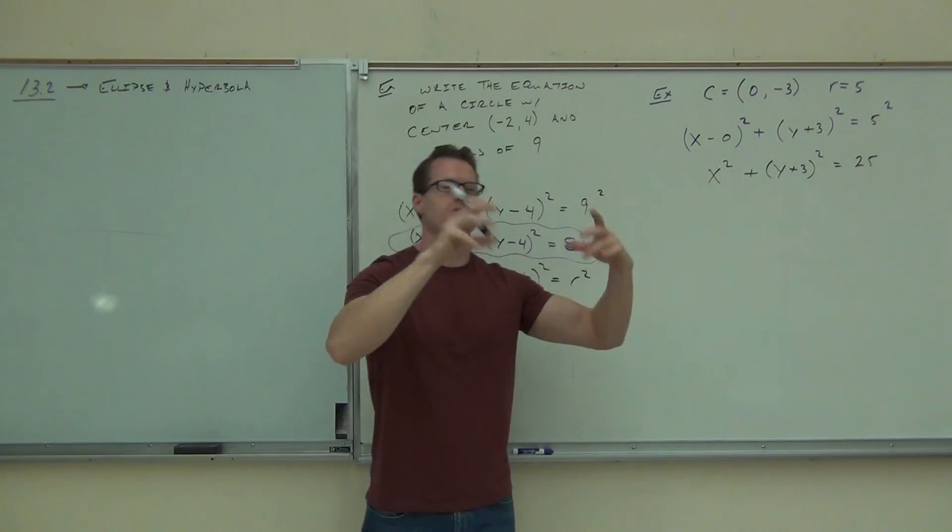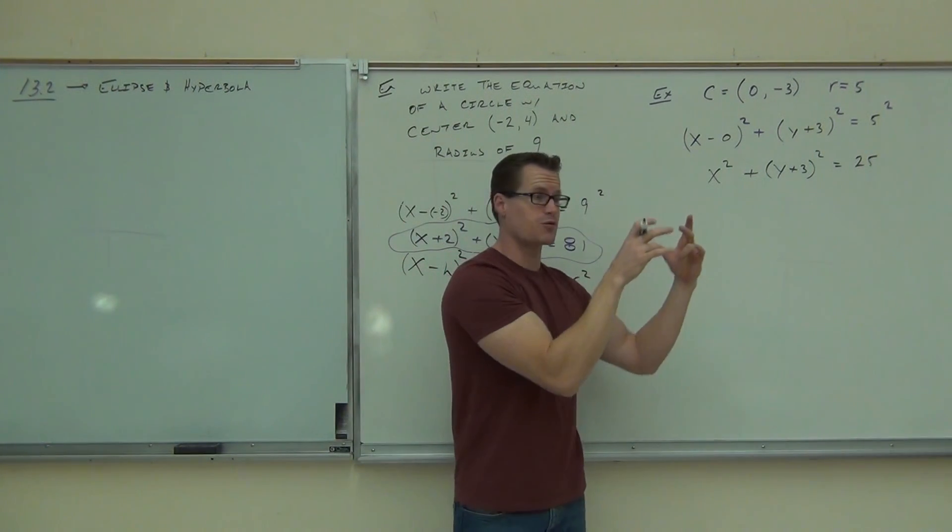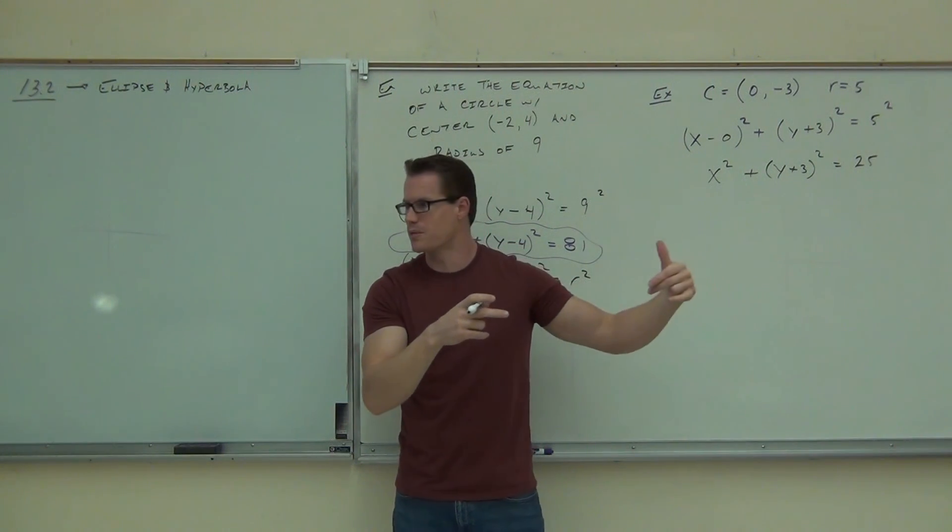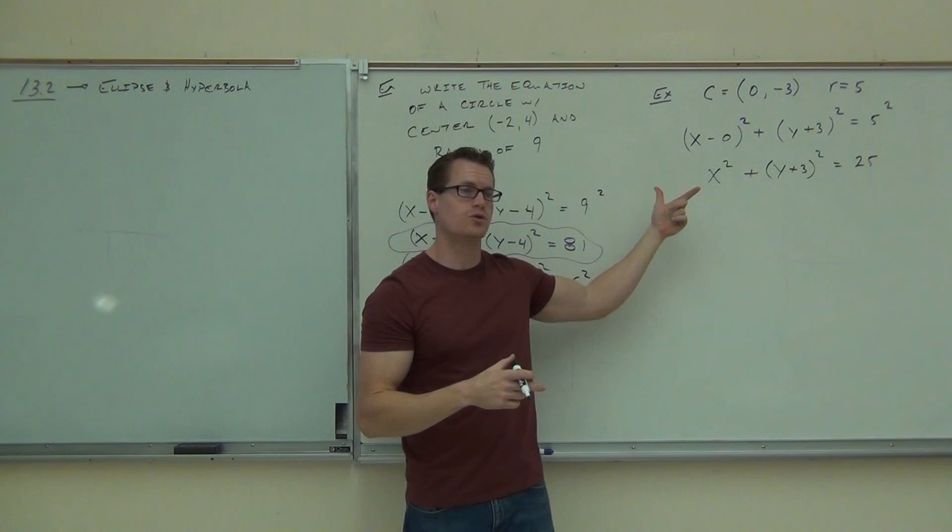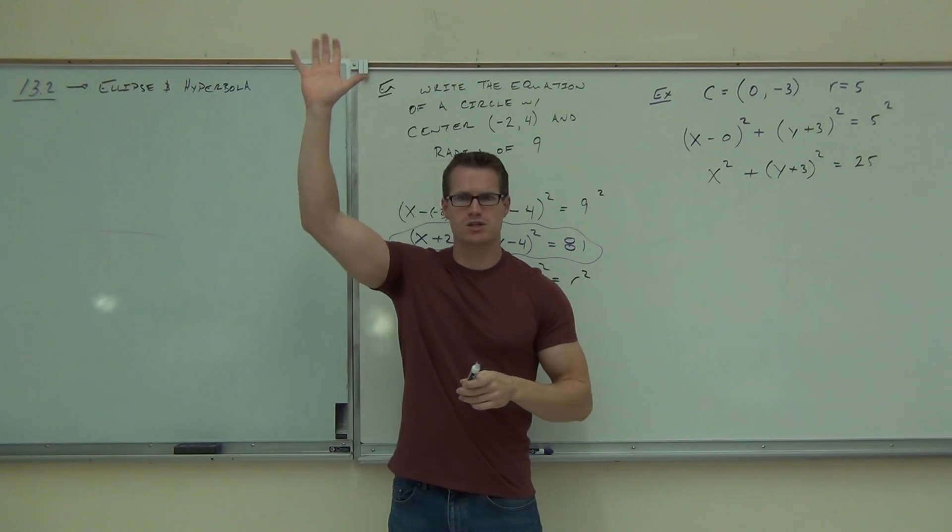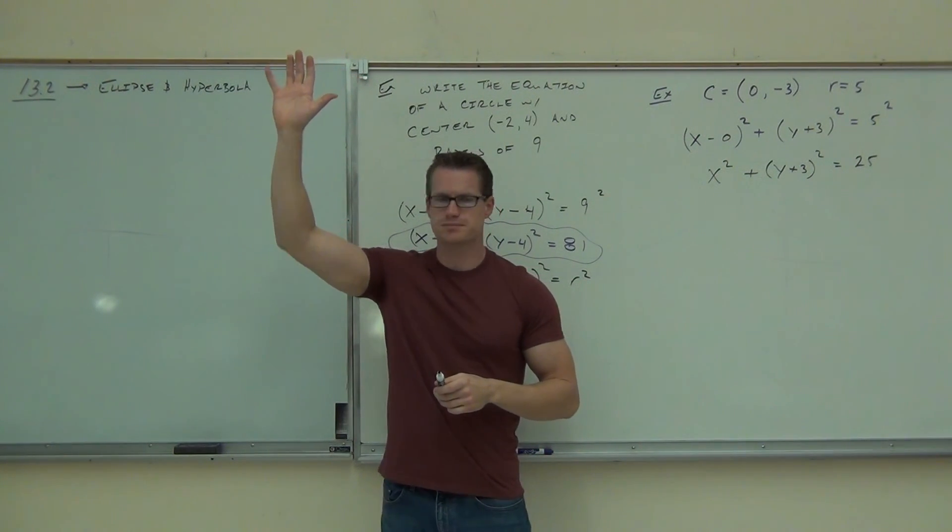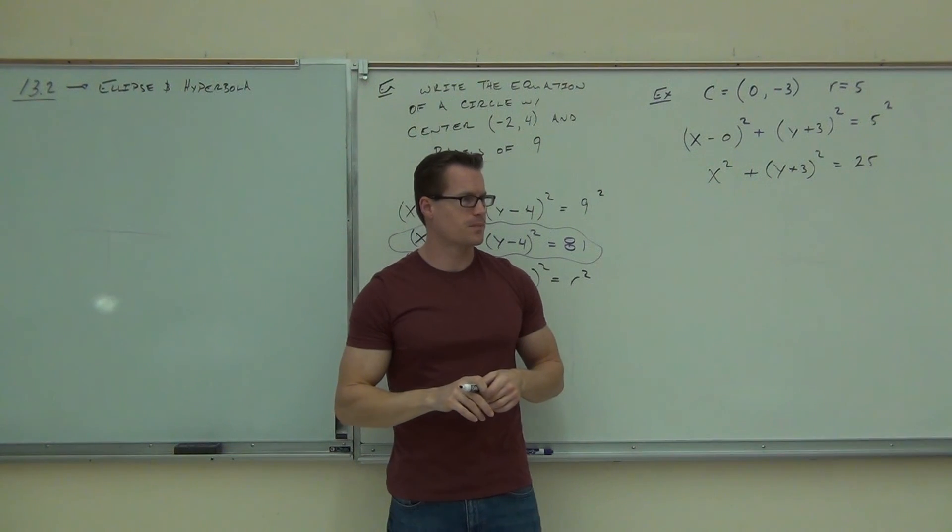So now we can go either direction. We can start from an equation, find the center and the radius and graph it. Or we can start from a graph. We can even start from a graph, right? And I can give you that in graph format with the center and the radius. You should be able to translate that into an equation for me. How many of you feel okay with what we just talked about so far? All right. Yes, no? All right.